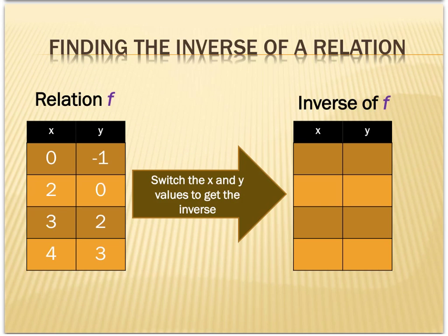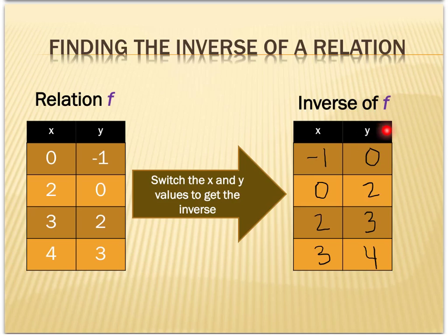Here I'm given a relation f with a given domain and range, and I want to find its inverse. It's as simple as switching the x and y values. So the x values of the inverse are now negative 1, 0, 2, and 3, and the y values are 0, 2, 3, and 4. All we did was take the domain of the relation — that's now the range of the inverse — and take the range of the relation — that's now the domain of the inverse.